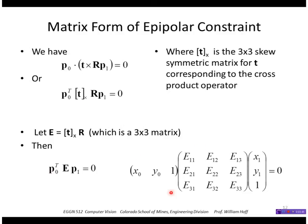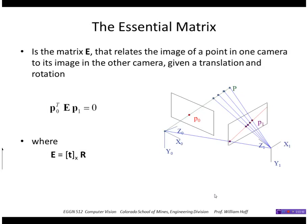So that's just a 3 by 3 matrix because both these two parts are 3 by 3 matrices. So then, I have the epipolar constraint defined by this, P0 transpose times E times P1 equals 0. So the essential matrix is that matrix E. It relates the image of a point in one camera to its image in the other camera, given a translation and rotation.